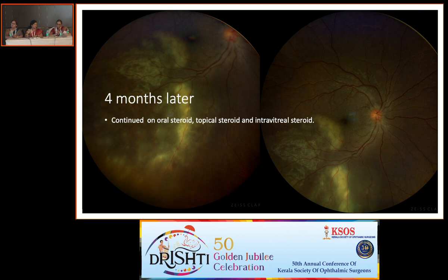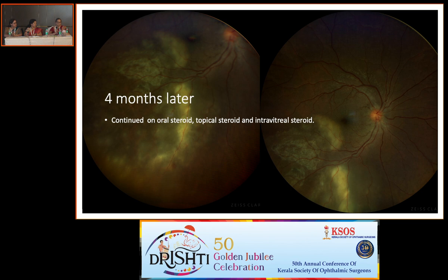Once you know the level of the lesion, decide whether it's infectious or non-infectious. In general, most retinitis is infectious until otherwise proven. Whereas choroiditis could be 50-50. Retinitis tends to be more toxo and viral; choroiditis tends to be TB and sarcoid.